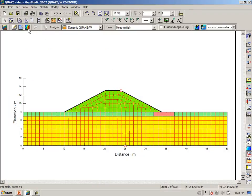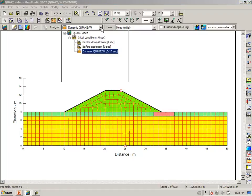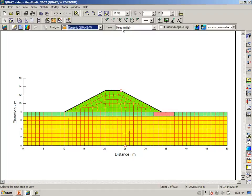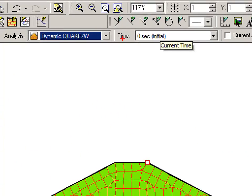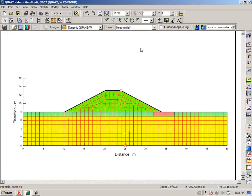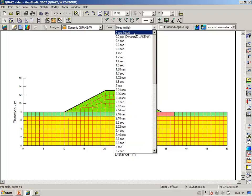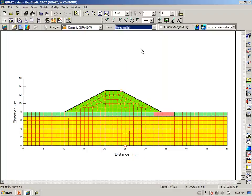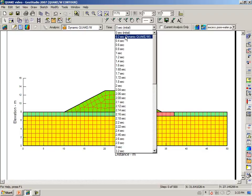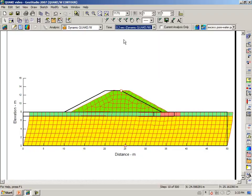When we are in the results view of the QuakeW analysis, notice we have here a time box, and we can look at the results for every time that the results have been saved. In this particular case, we are now looking at the initial static conditions, and then when we select at two-tenths of a second, we save the results every tenth step. This would be the displacement.